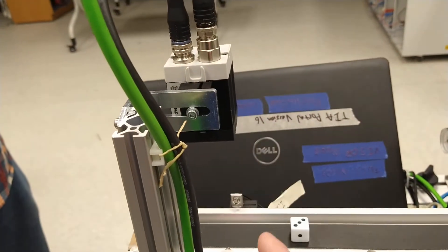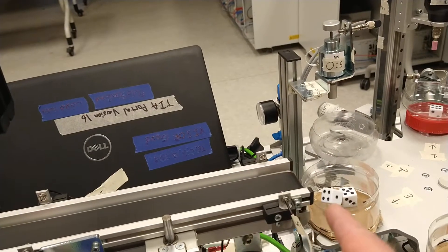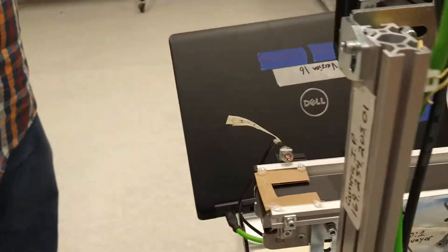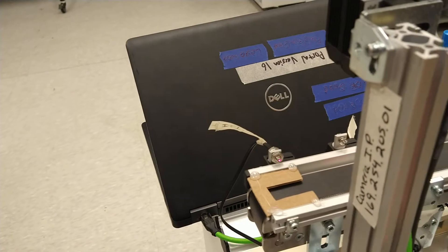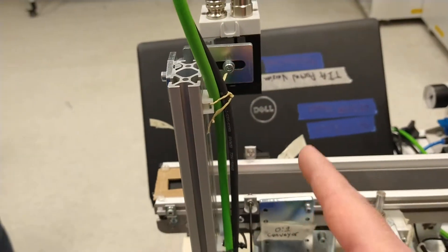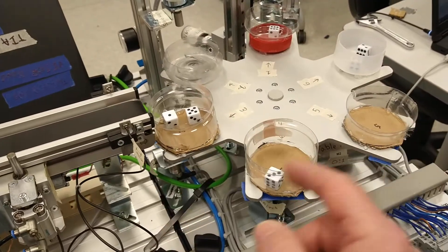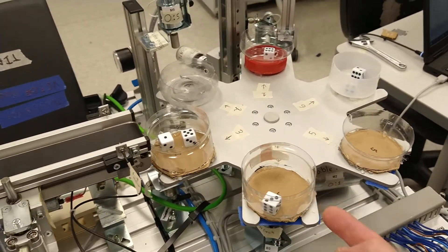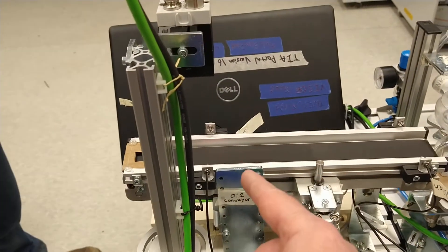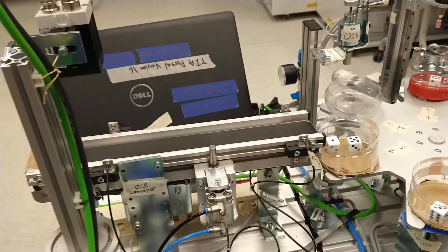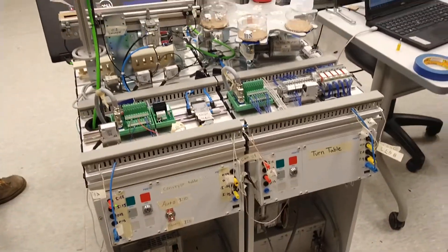So the way this is working is this camera's programmed to recognize each of the dice. This is just to make sure they don't get turned the wrong way. Once it recognizes, it sends a signal to this table saying 'Hey, you need to be in this position.' Once it's there, it sends a signal back to let the conveyor know it's okay to let the dice go. Very nice, and it was easy.